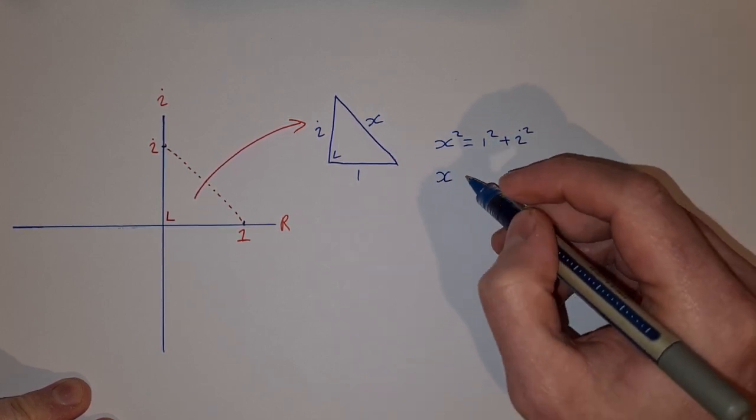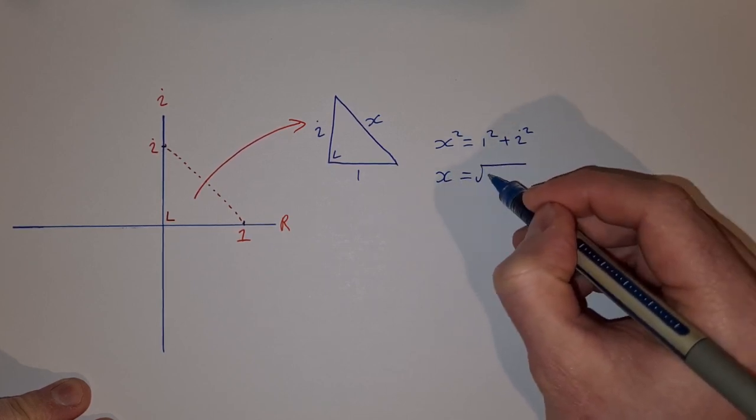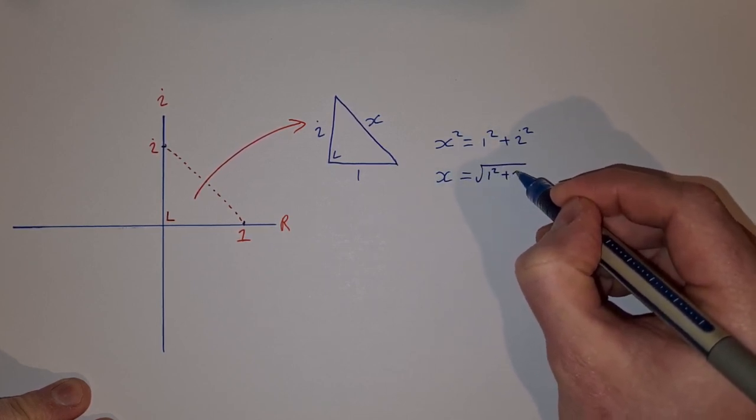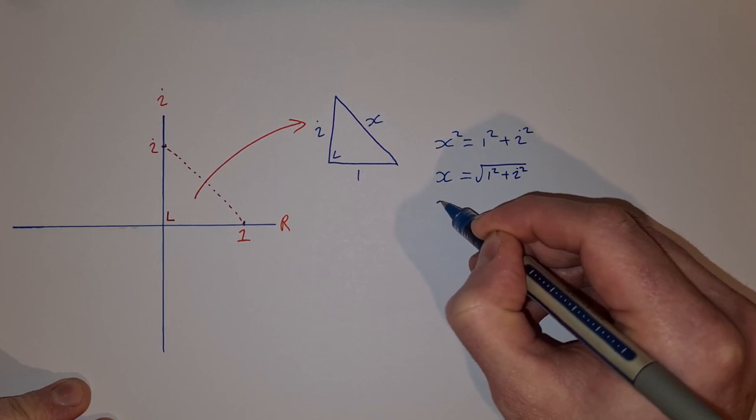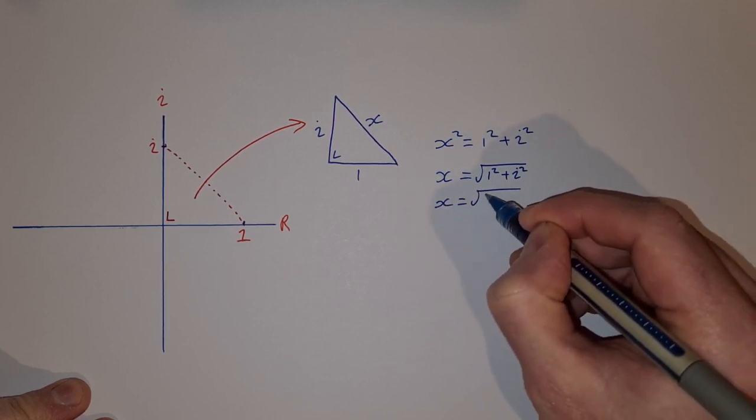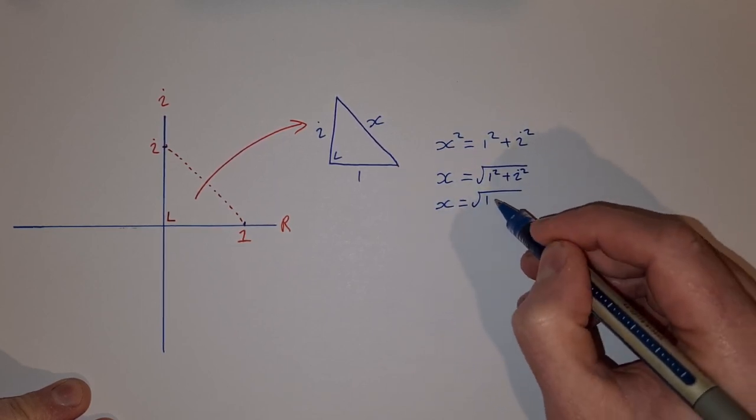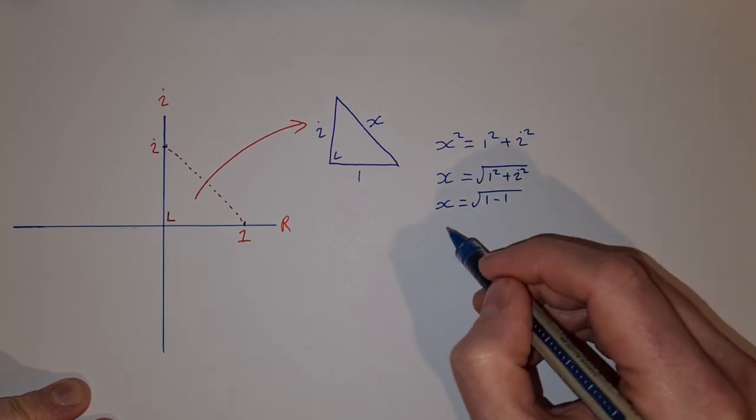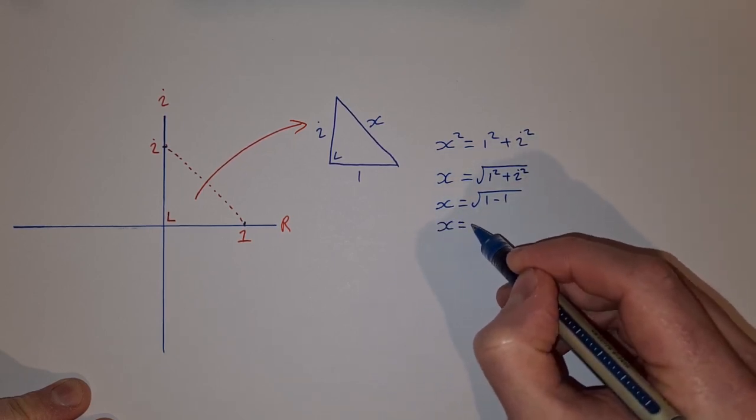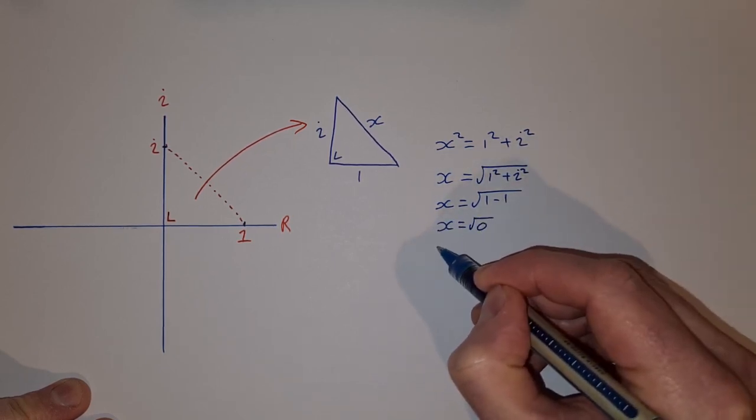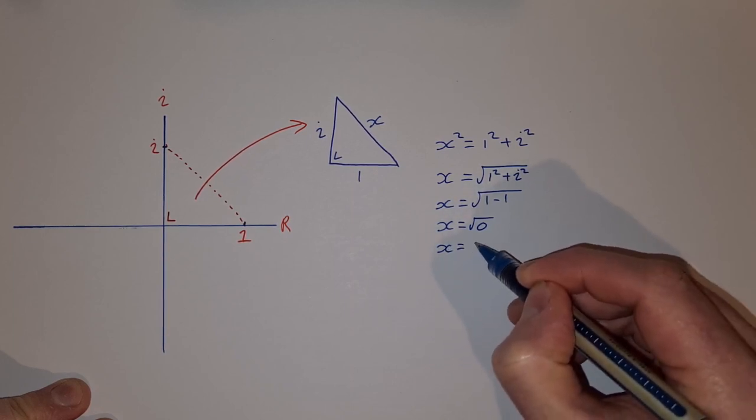So x is equal to the square root of one, and i squared is minus one, so that's one minus one. That means x is equal to the square root of zero, and the square root of zero is just zero.